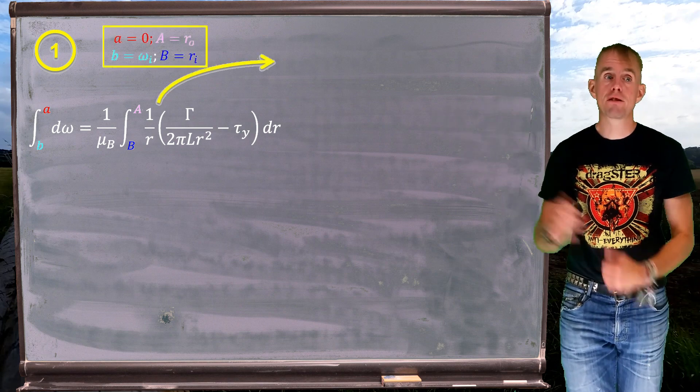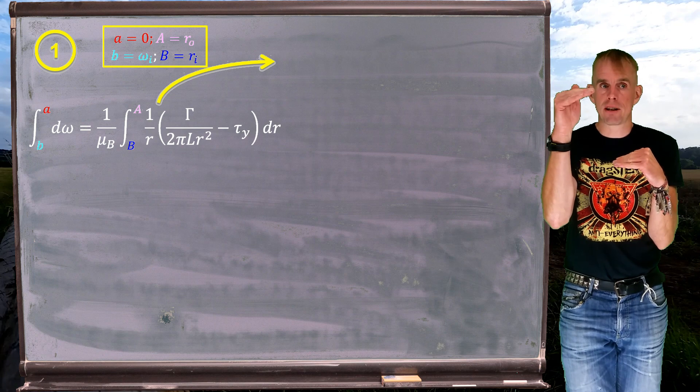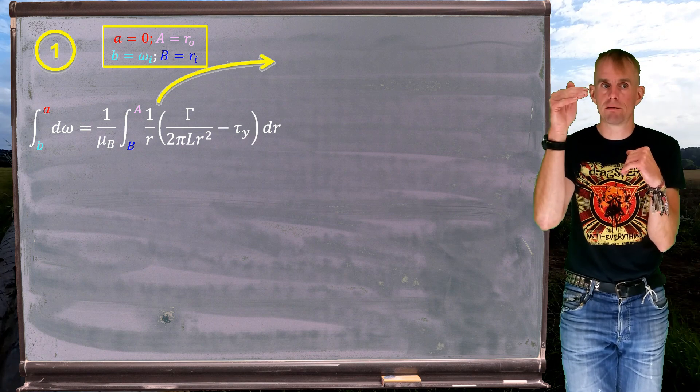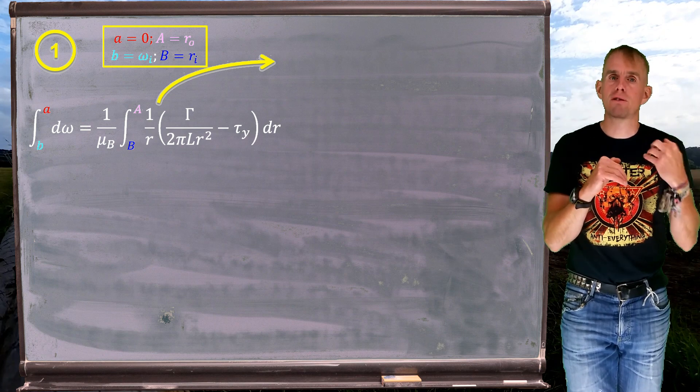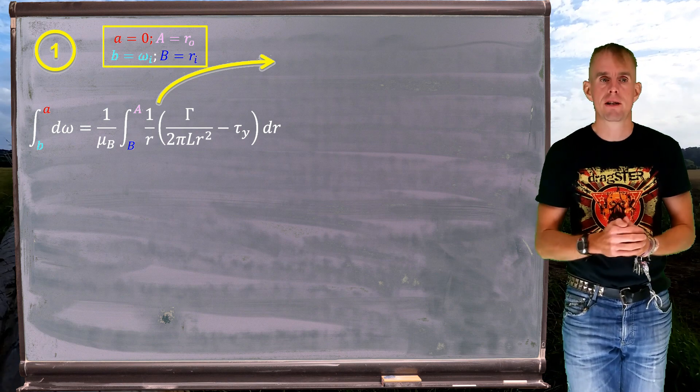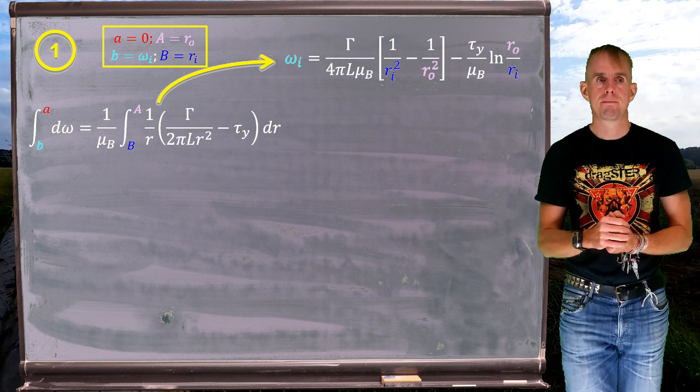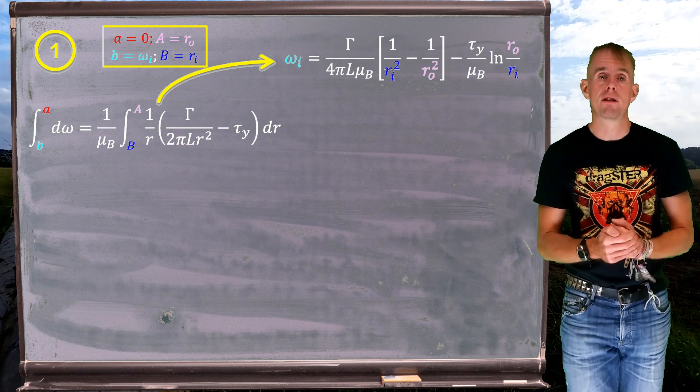So here's the integral that we've already done, from the inner cylinder to the outer cylinder, ri to r0, which corresponds to an angular velocity of omega i through to 0, because the outer cylinder is stationary. And there's the result that we achieved previously. That's my intermediate result.